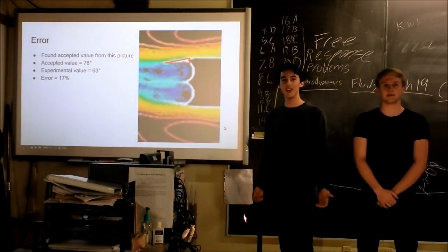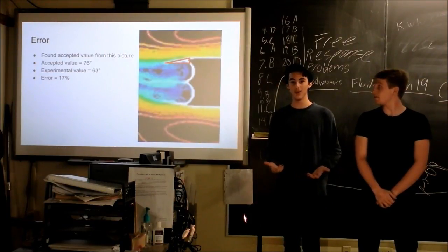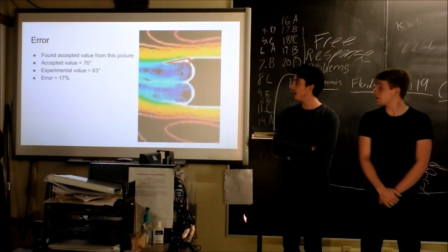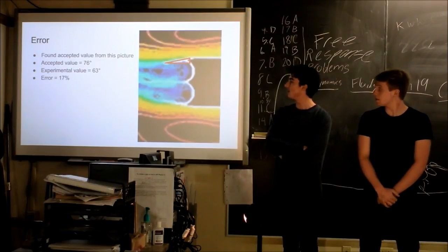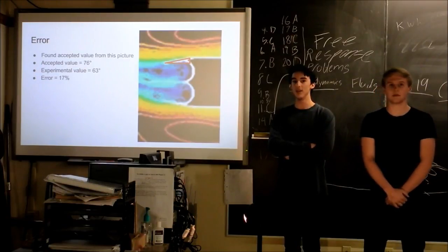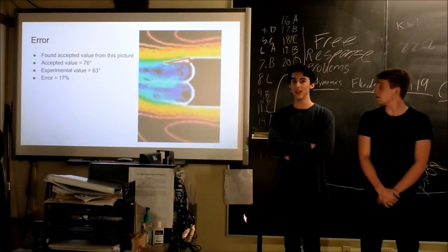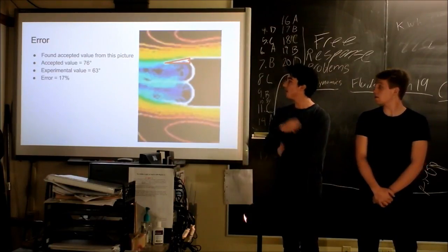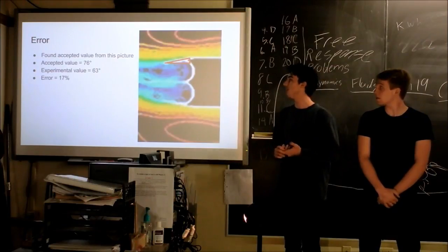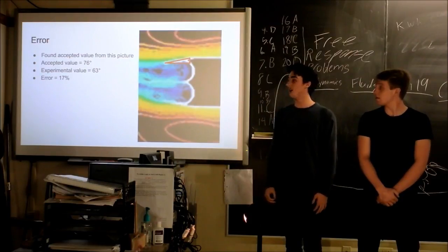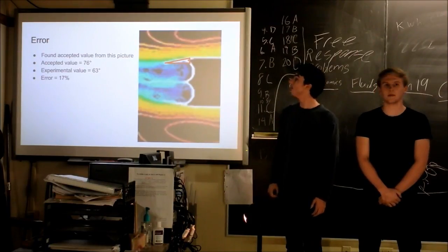To do the error calculations, we wanted to find an accepted value for the angle of the truck fin, but from all of our research, we couldn't really find one angle that was suggested to be the most optimal on the internet. But we did analyze this picture and were able to find the angle that it showed the truck fin being at. Since we assumed this was a demonstration of truck fins actually used, the science would have found the most optimal angle already. From this, we were able to find that the accepted value would be around 76 degrees. And then because ours was 63, it wasn't that far off — we got an error of 17%, so we were pretty happy with that.